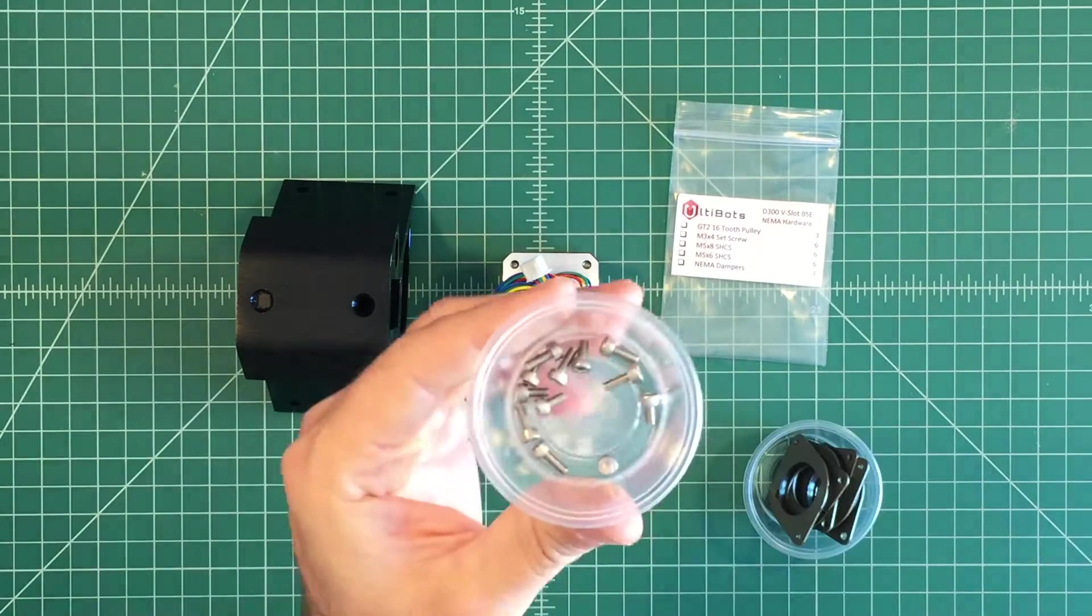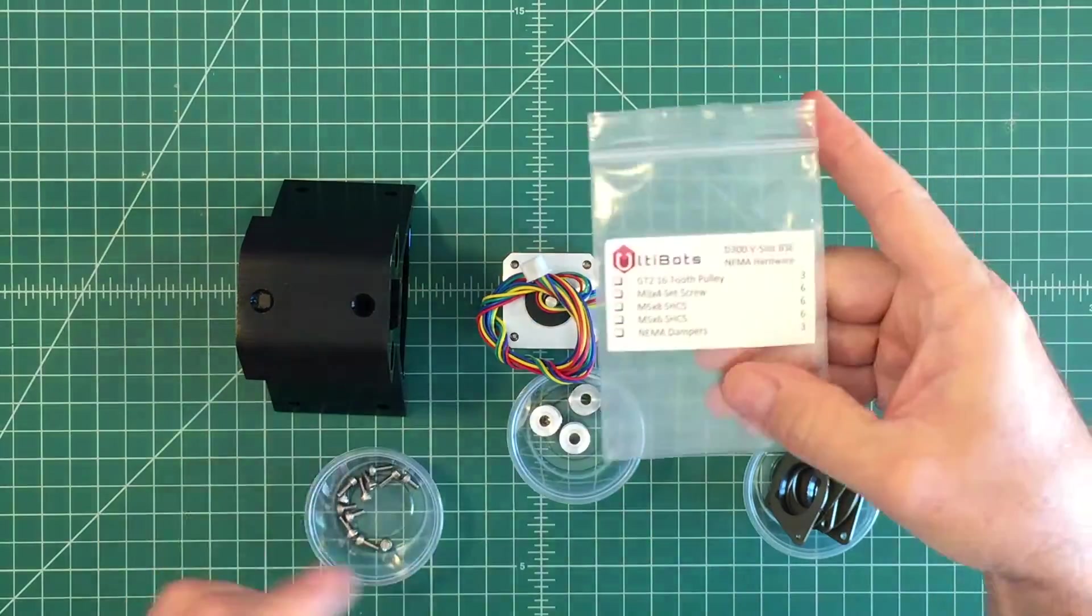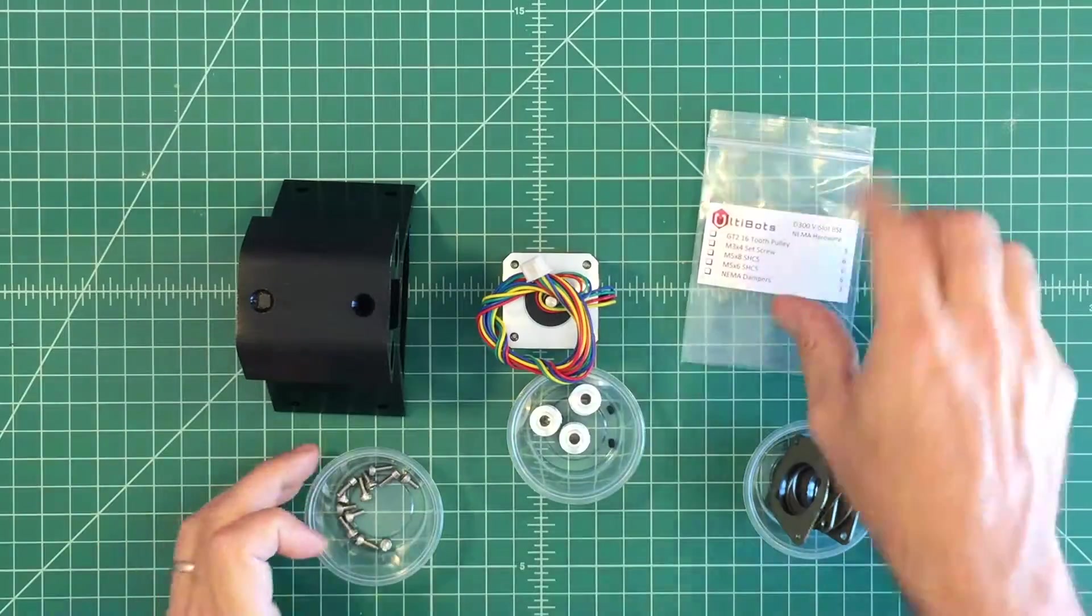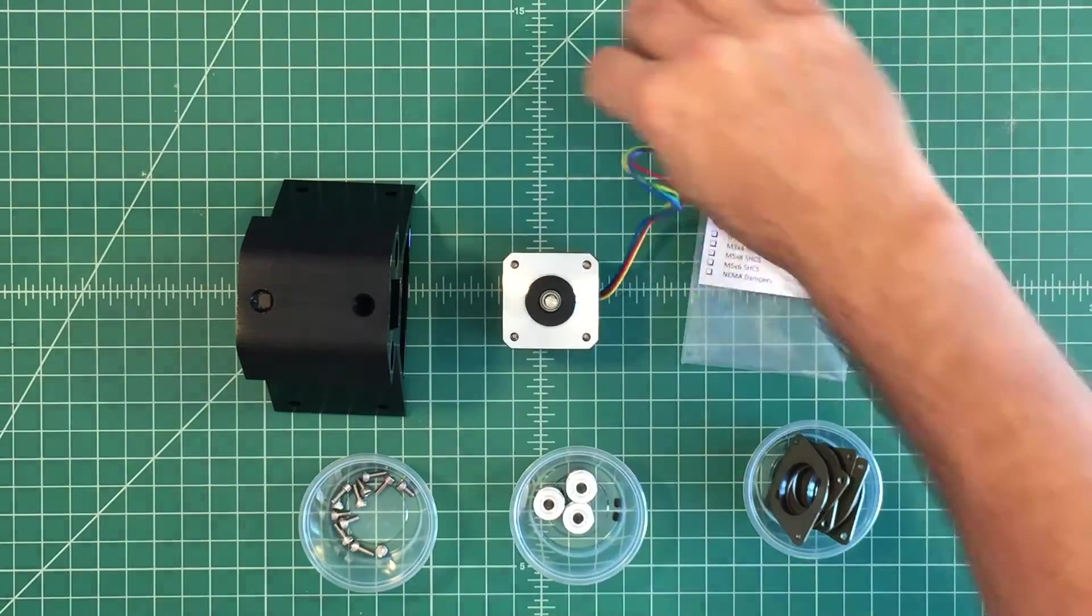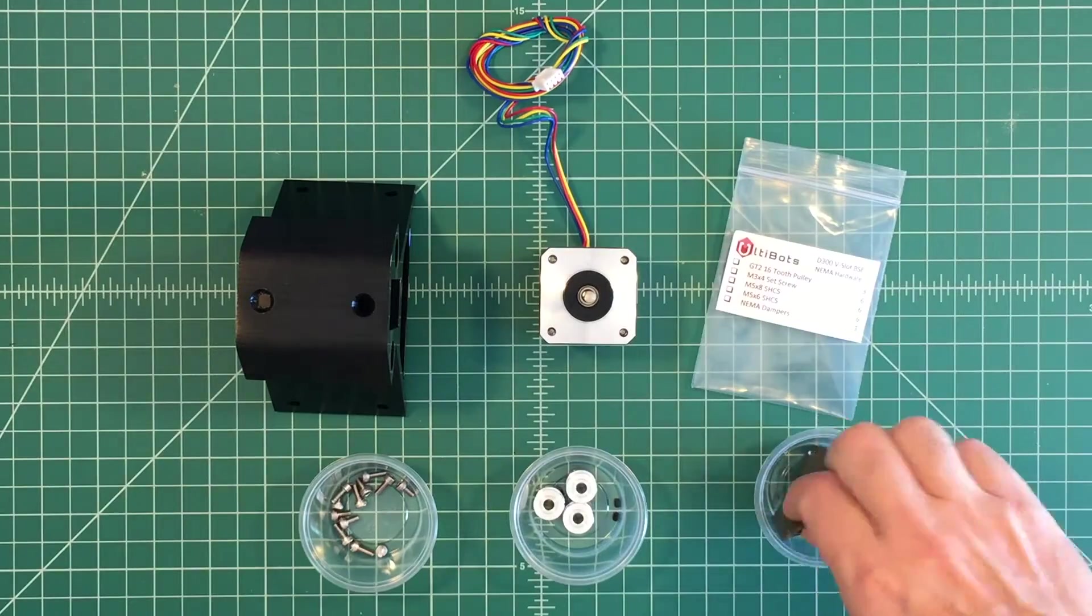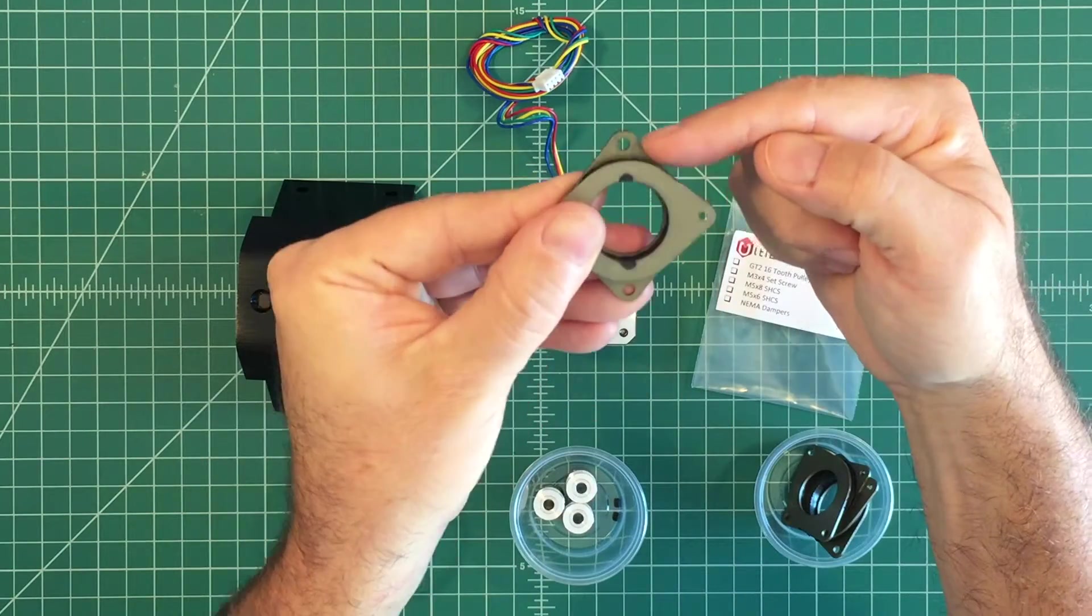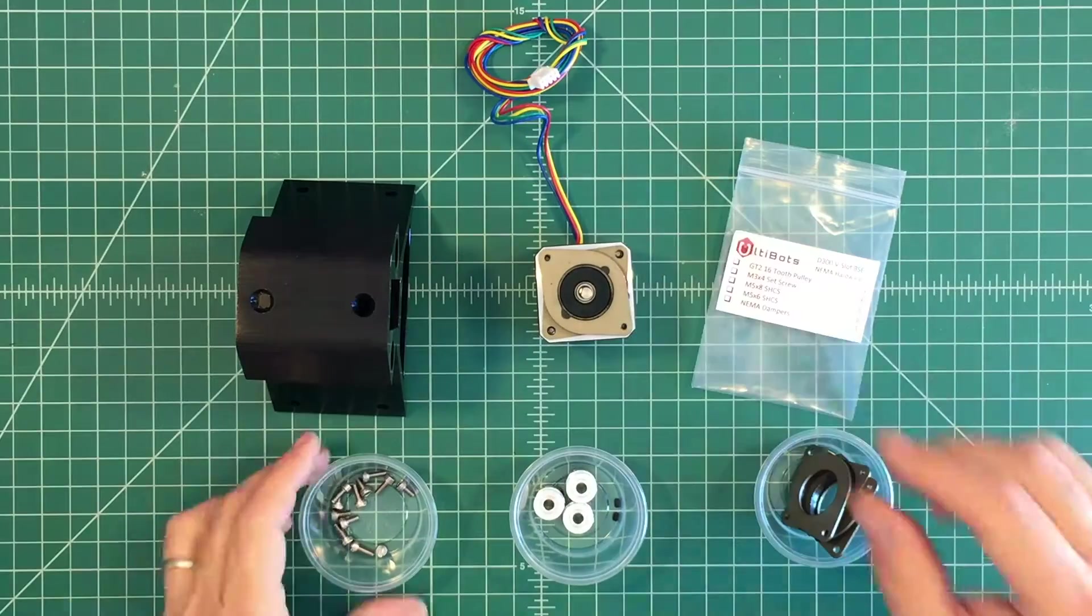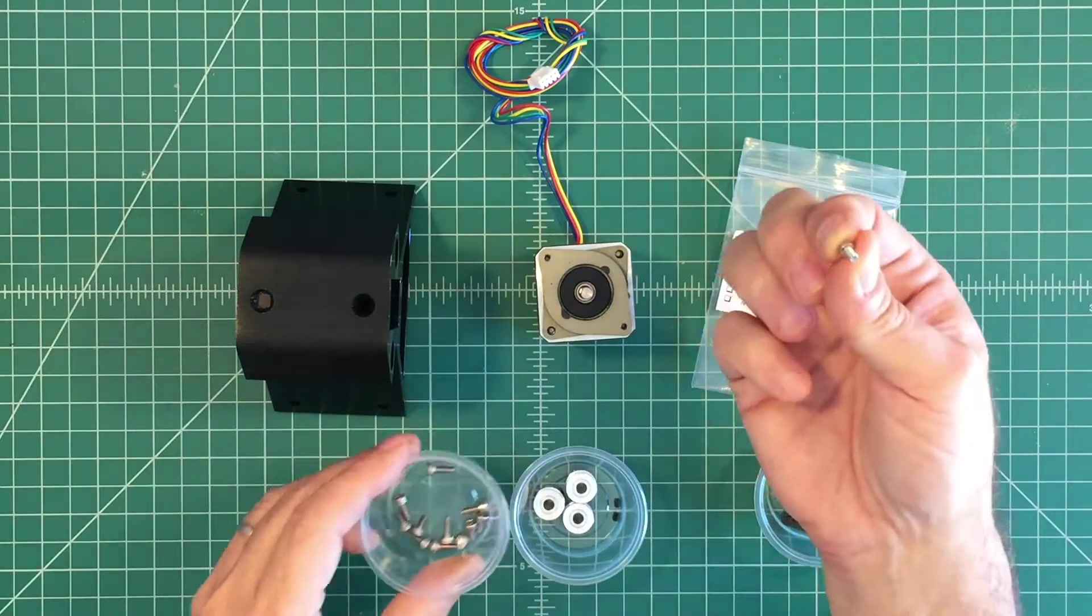Note there are two sizes of M3 screws for the NEMA dampers. Orient the cable of the NEMA motor facing away from you. Each NEMA damper has two larger holes and two threaded holes. Orient the larger hole to the bottom left of the NEMA motor.